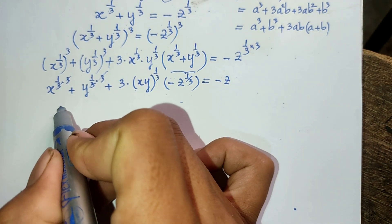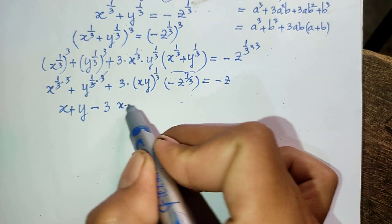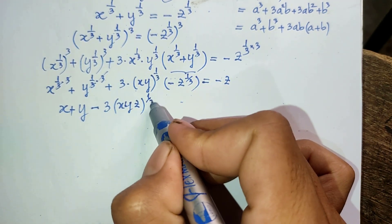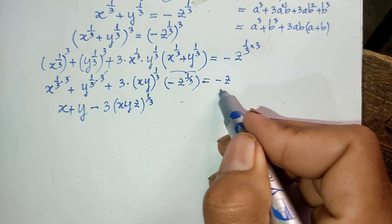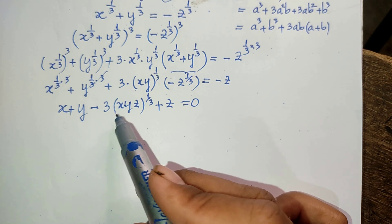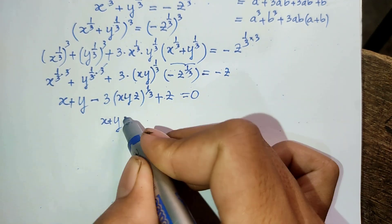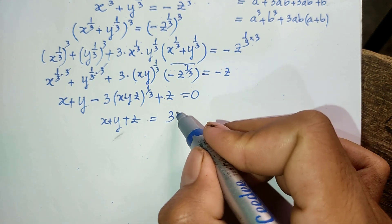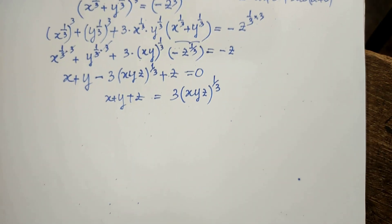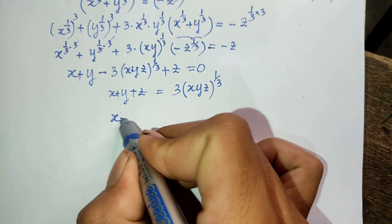Simplifying, we get x plus y, minus 3 times (xyz)^(1/3), equals minus z. Moving terms, we get x plus y plus z equals 3 times (xyz)^(1/3). Now I raise both sides to the power 3 to find (x + y + z)^3.